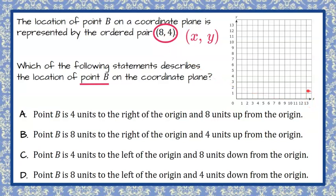Notice on our graph we have the x-axis right here, which is going to guide us to plot this part of the point. So we're going to go to the right 8 units. Then our y-coordinate tells us what to do on our y-axis. It's positive 4, so we're going to go up 4 and plot our point.